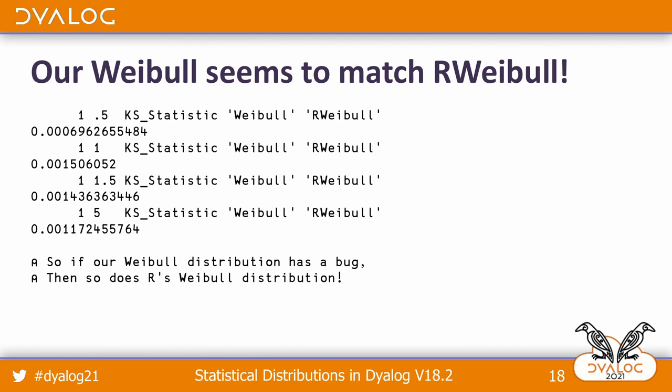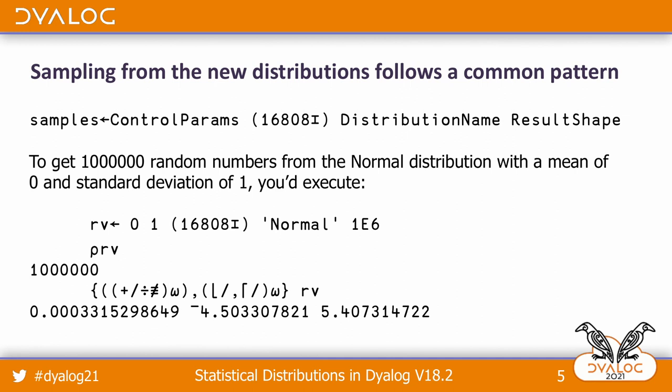There is a question: how do you generate the distribution — is there an I-beam for it? Yes. The I-beam is 16808. The left argument is the control parameters for the distribution you want to use, and the right argument is two things: the name of the distribution, and the shape of the result you want.